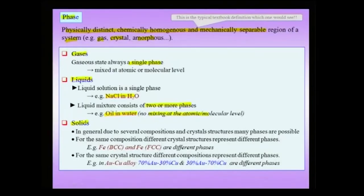Solids on the other hand are more interesting and rich. In general, due to several compositions and crystal structures, many phases are possible. This is very important to note: for the same composition, different crystal structures represent different phases. Even though my composition could be pure iron, if I change my crystal structure then they represent different phases — like iron BCC and iron FCC are different phases, or silicon in the diamond cubic form versus silicon in the amorphous form represent different phases.